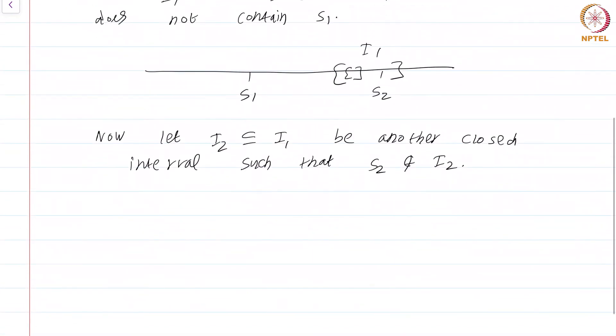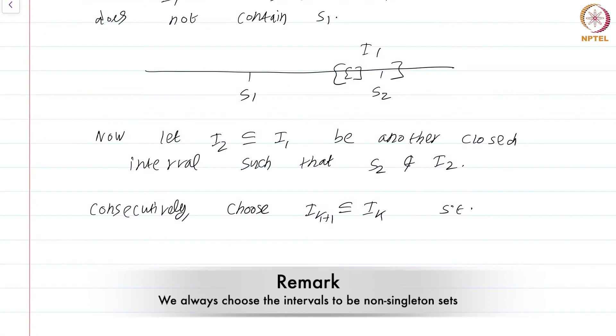Consecutively choose I_{k+1} subset of I_k such that S_{k+1} is not an element of I_{k+1}. This can always be done.